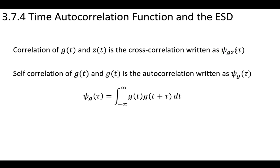And if you have this correlation of the signal with itself, we'll call this the autocorrelation. So the correlation of the same signal is the autocorrelation, and this one is just ψ_g(τ). You can define this as the integral from minus infinity to infinity of this quantity.